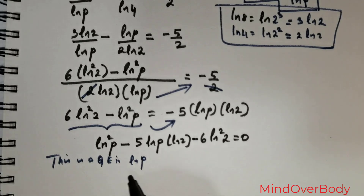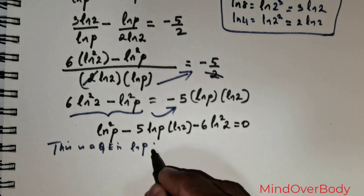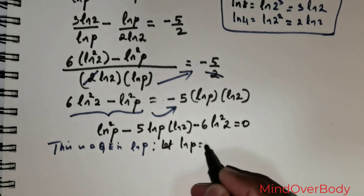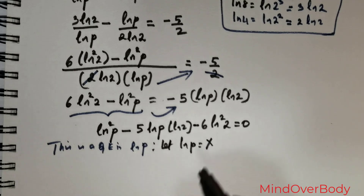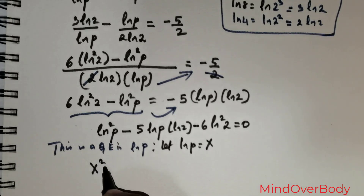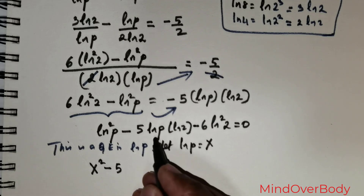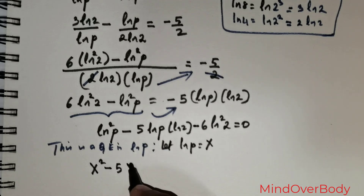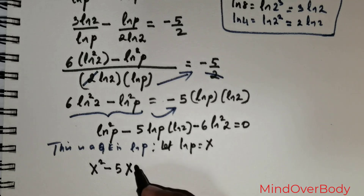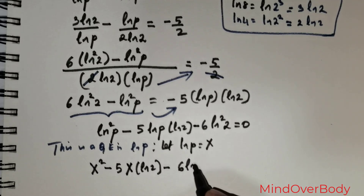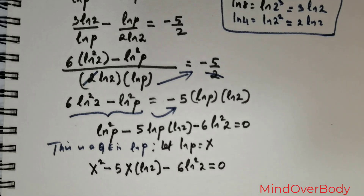Let ln(p) = x. Then the equation can be rewritten as x² minus 5·x·ln(2) minus 6·ln²(2) equals 0.